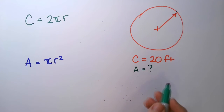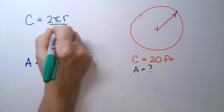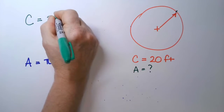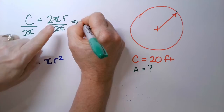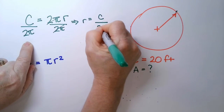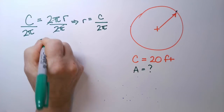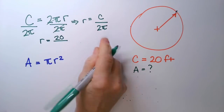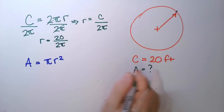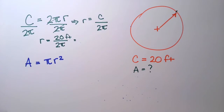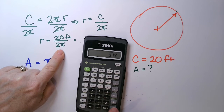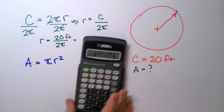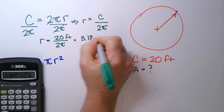So I'm going to use my equation for circumference, which is C = 2πR, to find R, because I have C — it's 20. R needs to be by itself, so divide both sides by 2π. 2π cancels with 2π, so R equals C over 2π, which is 20 over 2π. On the calculator: 20 divided by 2 divided by 3.14, and I get 3.18 feet.